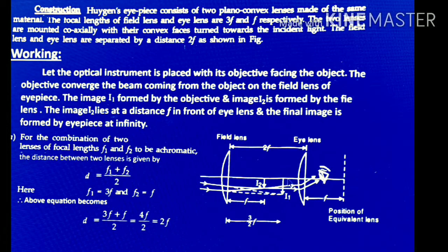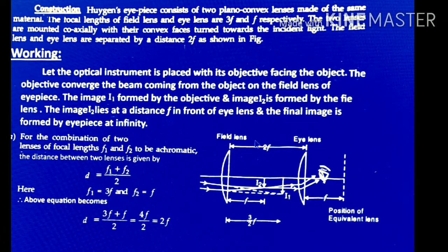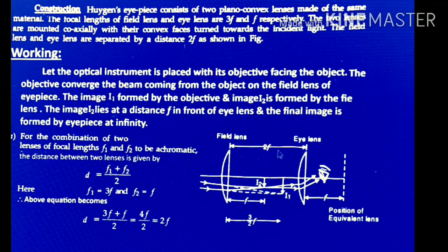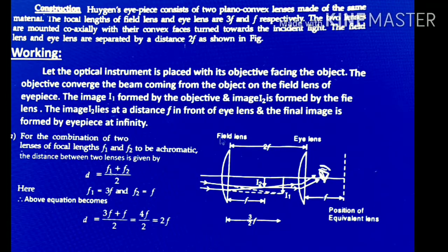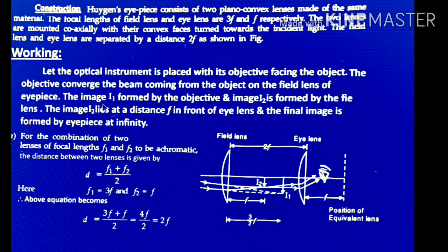These lenses are separated, so the distance between the field lens and the eye lens is 2F. Today we are discussing the working of the Huygens eyepiece.